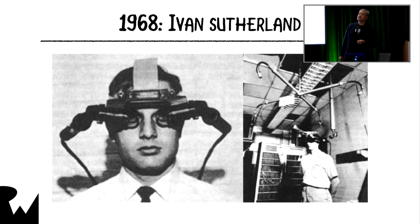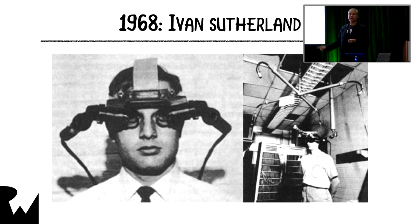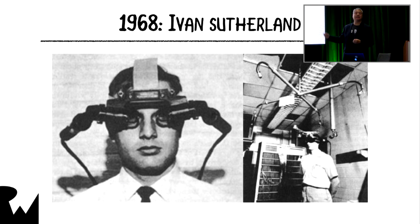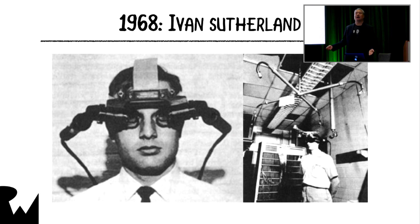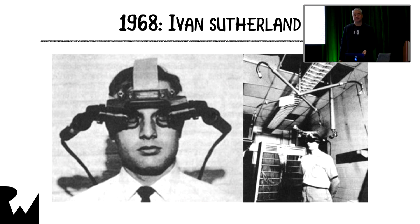In 1968, Ivan Sutherland invented the first AR rig, nicknamed the Sword of Damocles because it hung over your head and was huge. He's considered the father of computer graphics. A lot of his students went on to do great things, including Alan Kay, who made Smalltalk — the basis for just about every object-oriented programming language we use today — Henri Gouraud, who made the shading method that bears his name, and Ed Catmull, who ended up doing some really important stuff at Pixar.